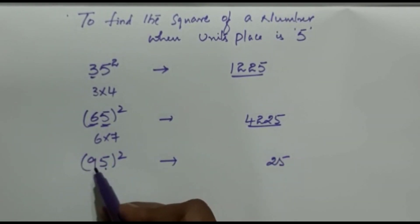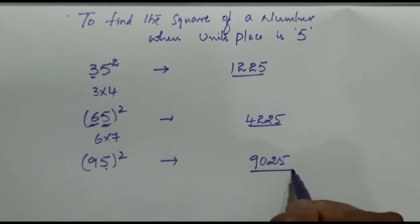And 9 is there. And 9's next number, that is 10. 9 tens are 90. So 95 squared is 9025.